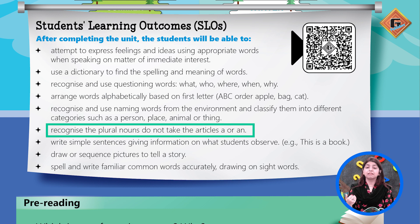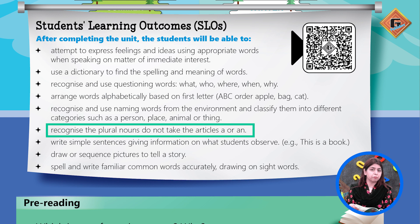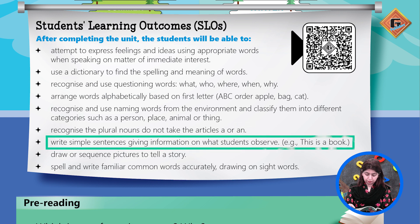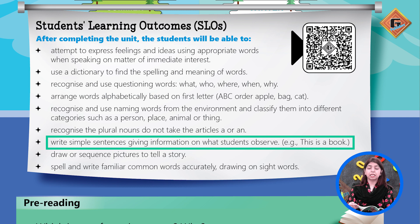ہم کبھی بھی an eggs نہیں کہیں گے۔ یہاں پر ہم نے بچوں کو یہ بتانا ہے کہ جب بھی ہمارے پاس plurals ہو جائیں گے اس کے ساتھ a اور an نہیں لگے گا۔ Next ہمارے پاس ہے: write simple sentences giving information on what students observe — جیسے this is a book۔ یعنی کہ بچے جو observe کر رہے ہیں اس کو دیکھتے ہوئے جملہ بنا سکیں۔